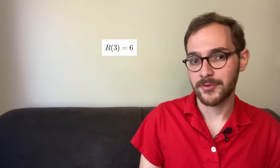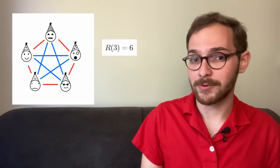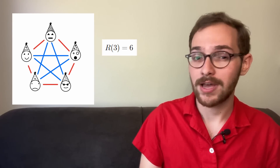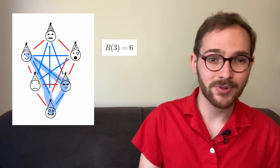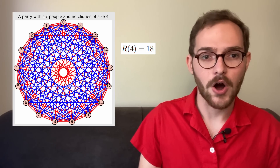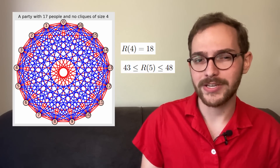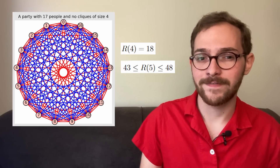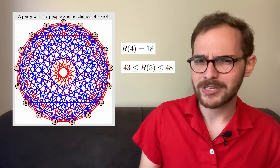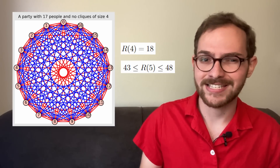For example, r of 3 is 6, because a party with 5 people can have no red or blue triangles, but any party with 6 people is doomed. Computing r of k is a fiendishly hard task. r of 4 is 18, but all we know about r of 5 is that it's between 43 and 48. The most published mathematician ever, Paul Erdős, said something like this: if aliens invaded Earth and gave us a year to find r of 5 or face obliteration, then the planet working together could do it. But if we had to find r of 6, we'd have better luck fighting the aliens.